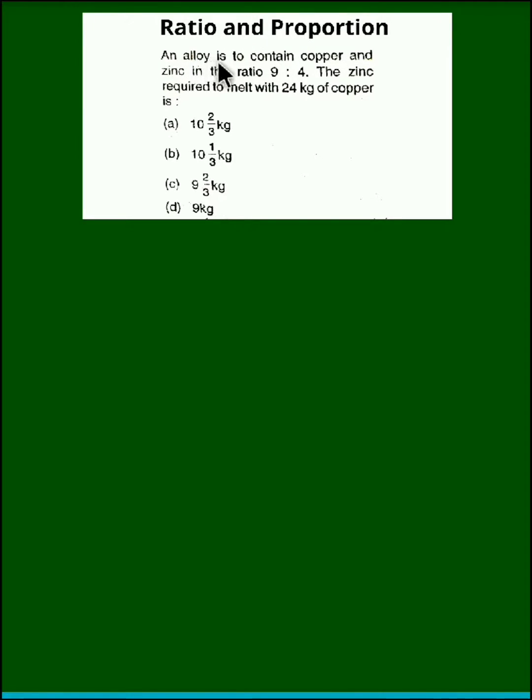The question is: an alloy is to contain copper and zinc in the ratio 9 is to 4. The zinc required to melt with 24 kilograms of copper is.